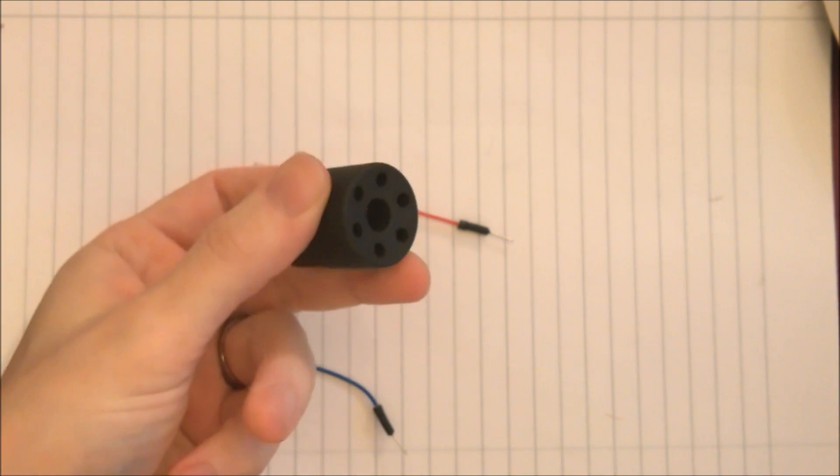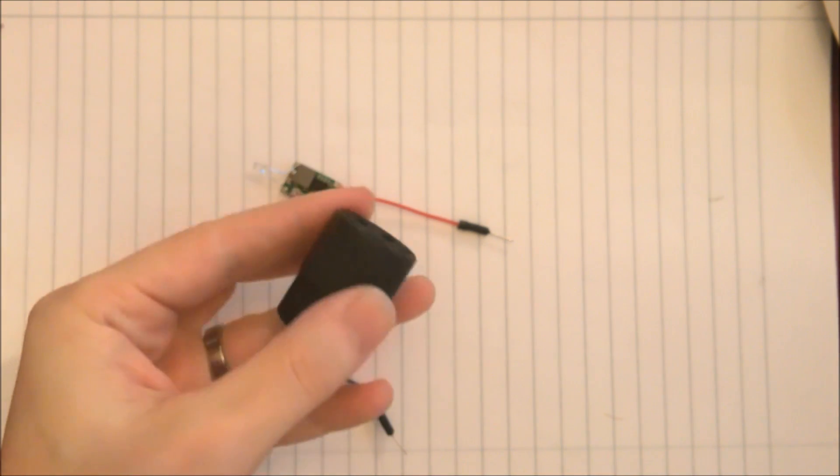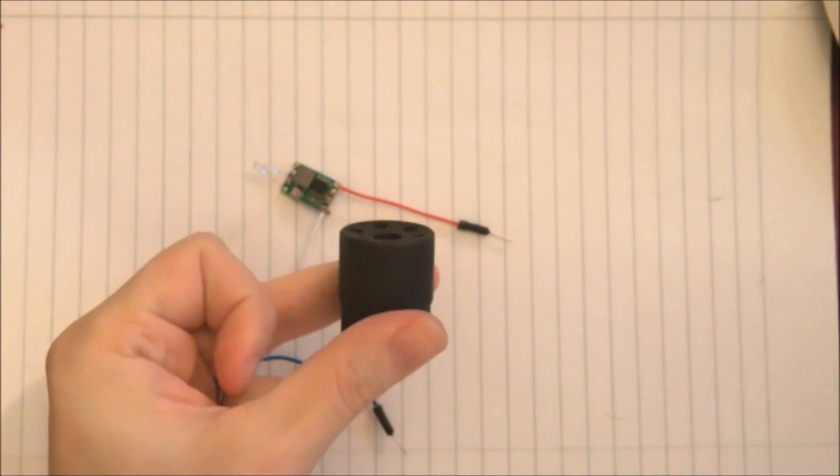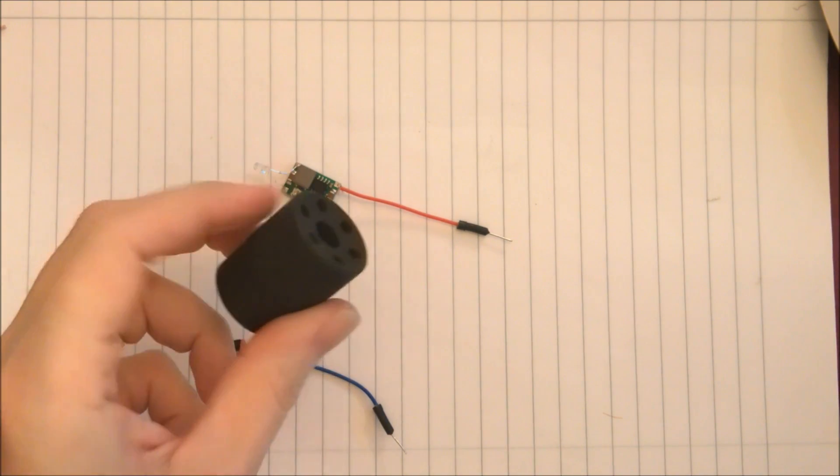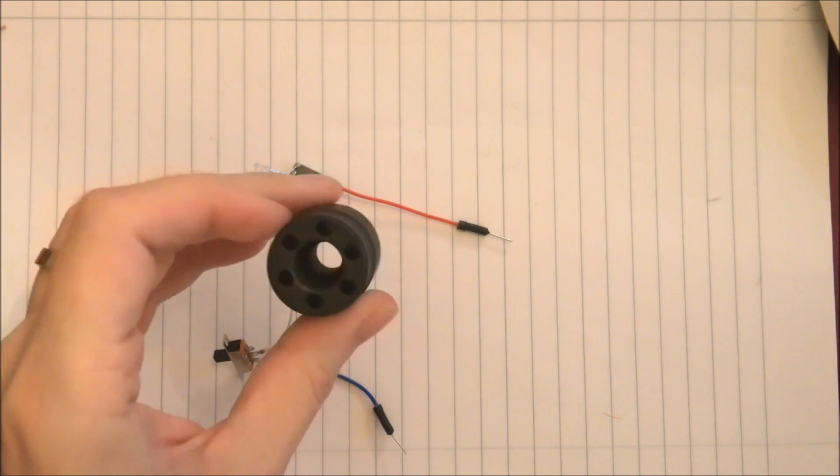Now this is the flash hider from the gun I want to use the tracer on. This is the PDR-C from Magpul.